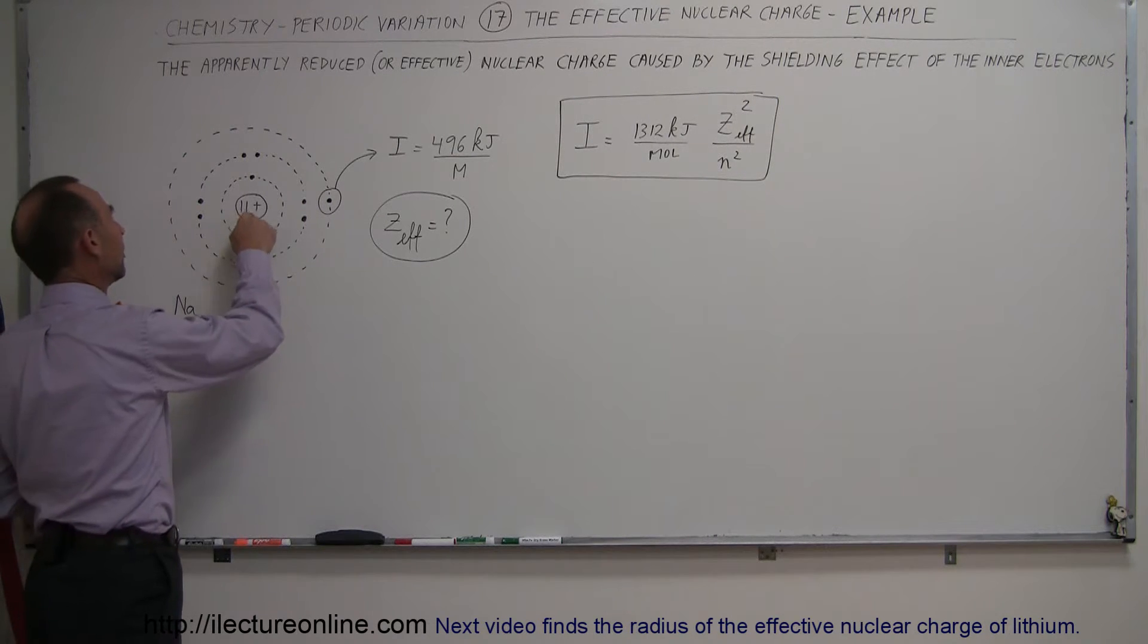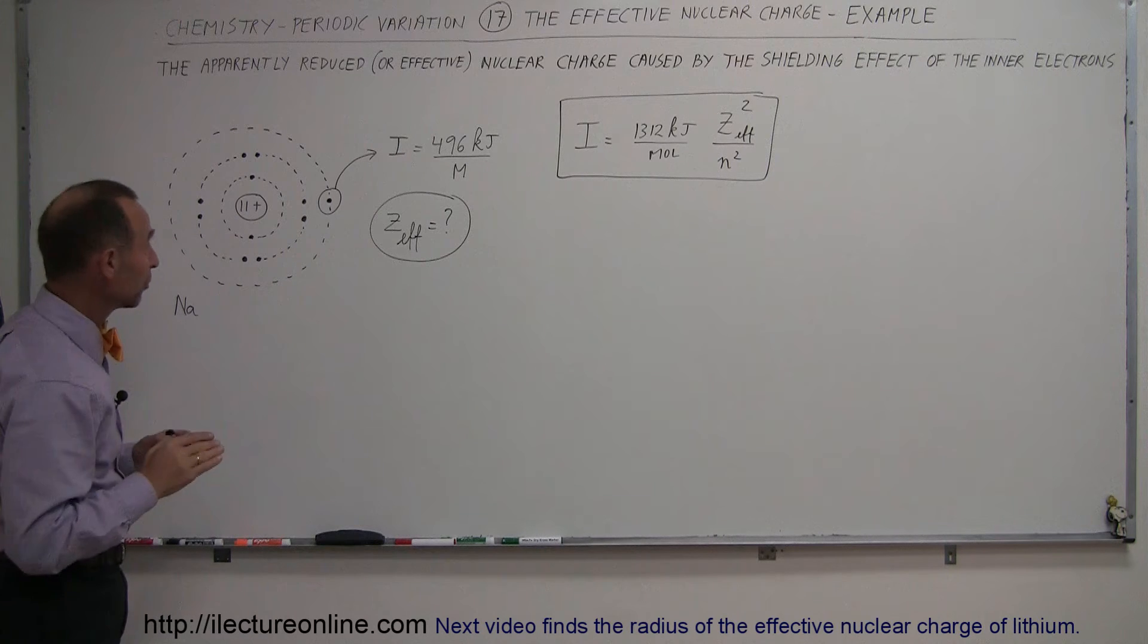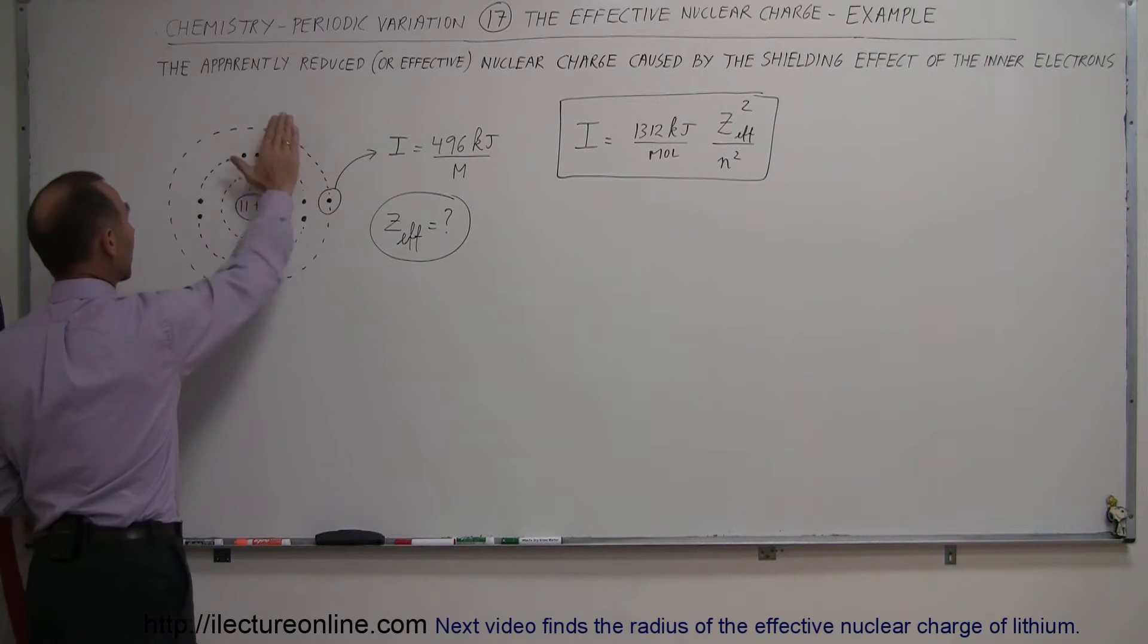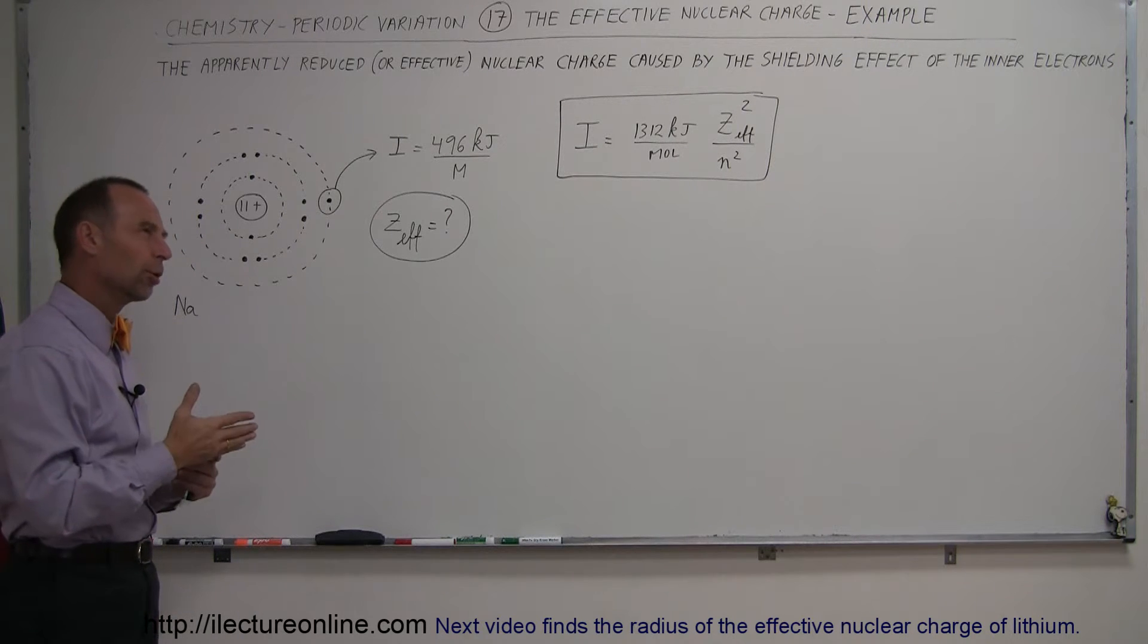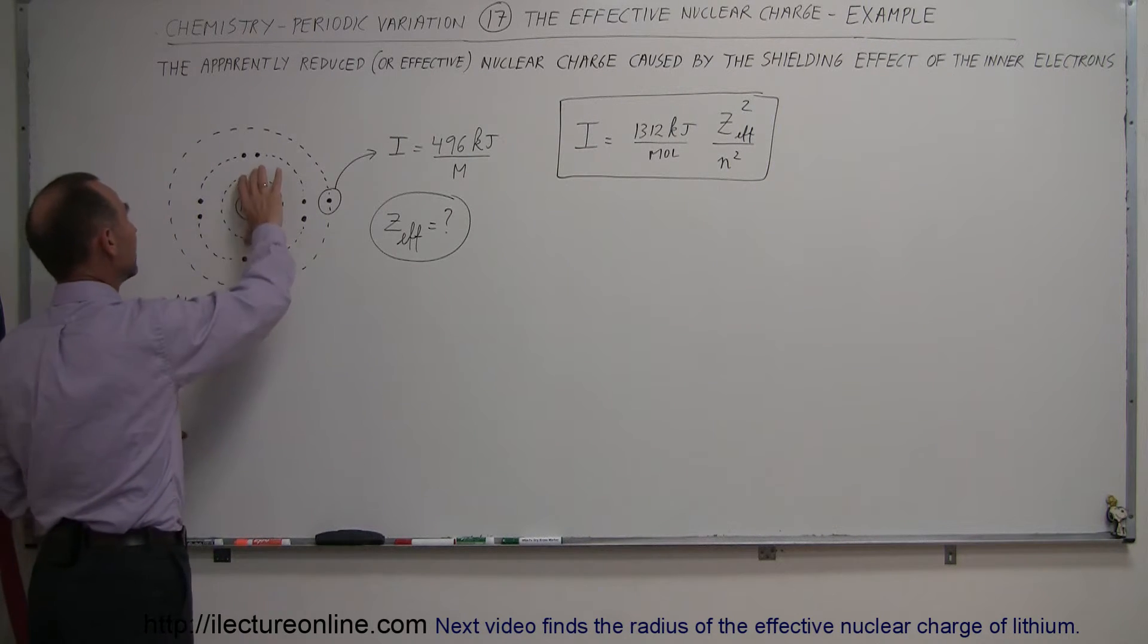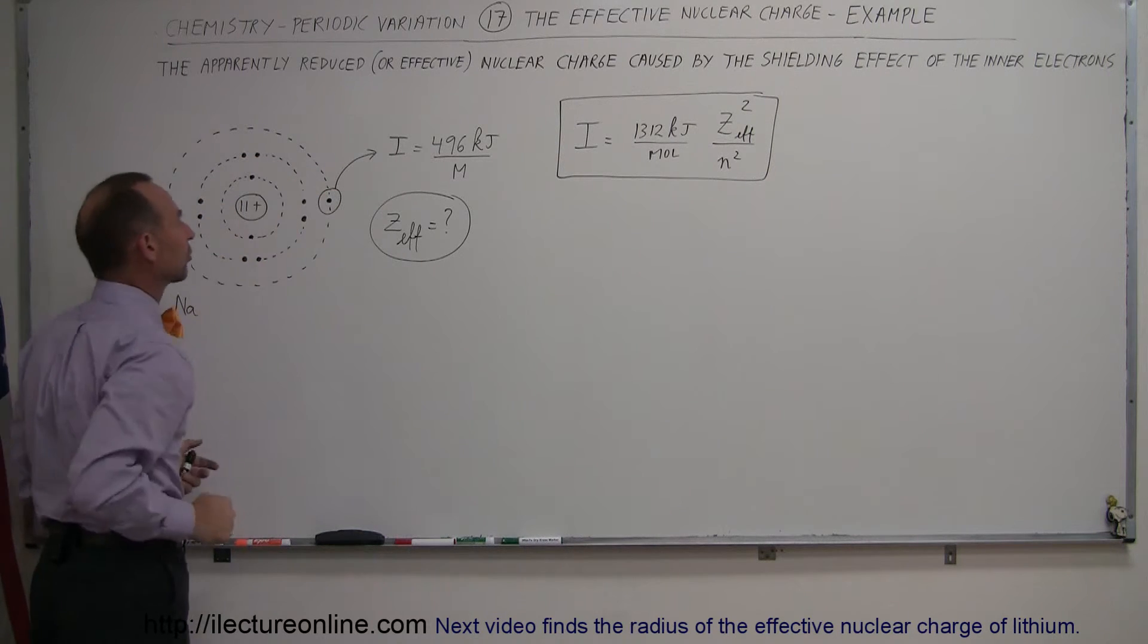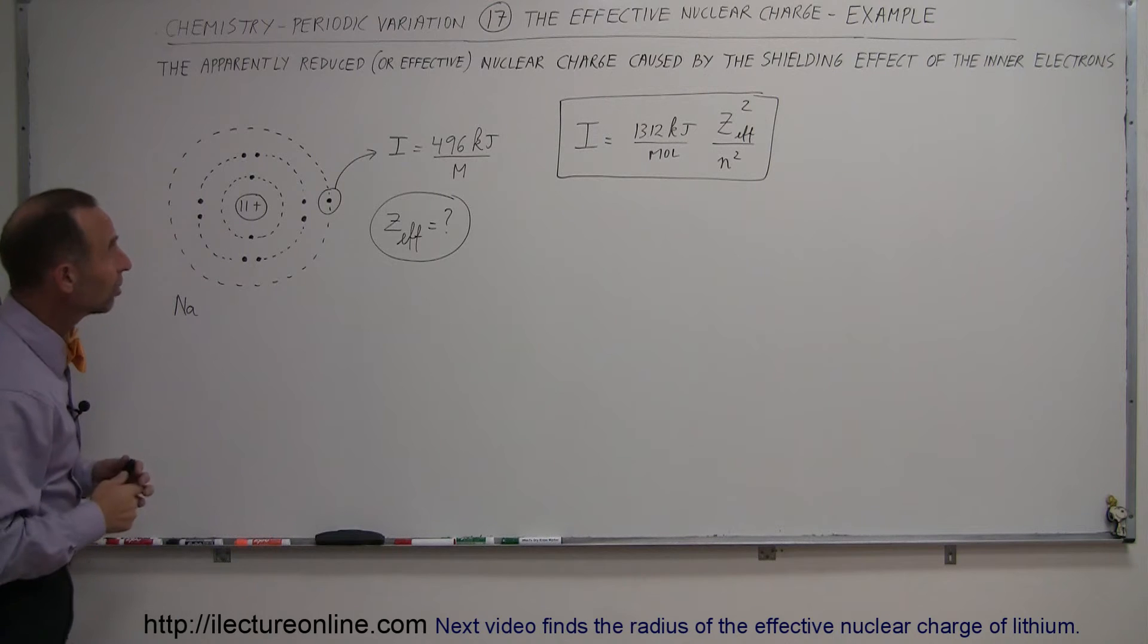A sodium atom has 11 positive charges in the nucleus, because there's 11 protons there. There's 11 electrons in orbitals around the nucleus. We have two in the innermost energy level, eight in the next energy level, and one lone electron in the third energy level.